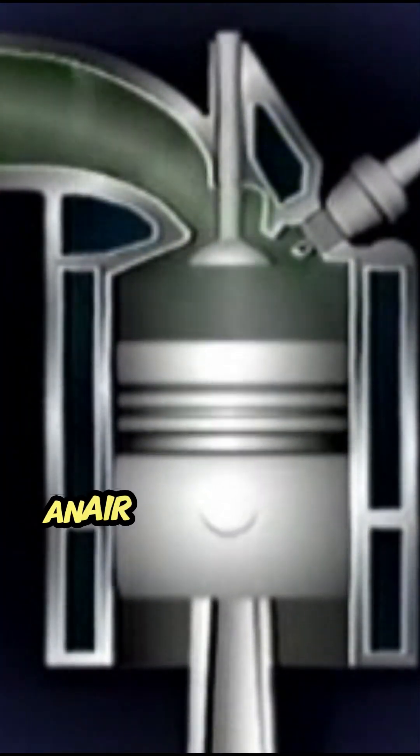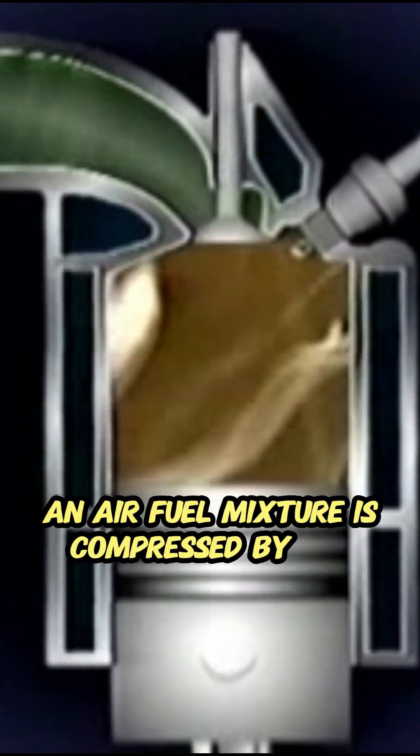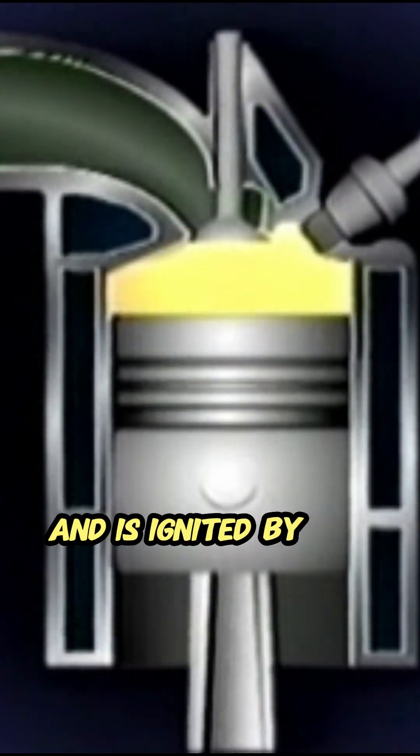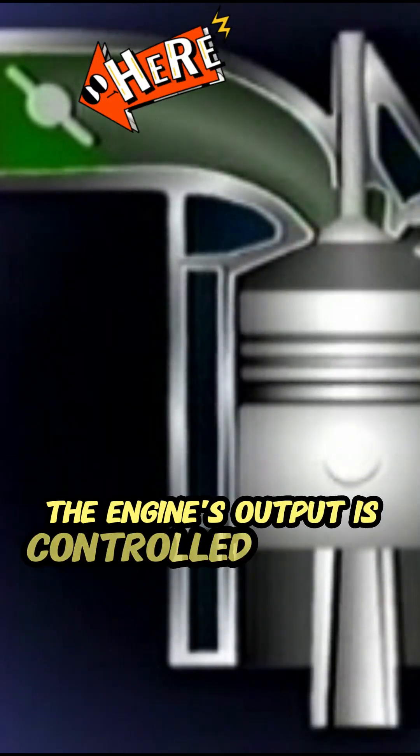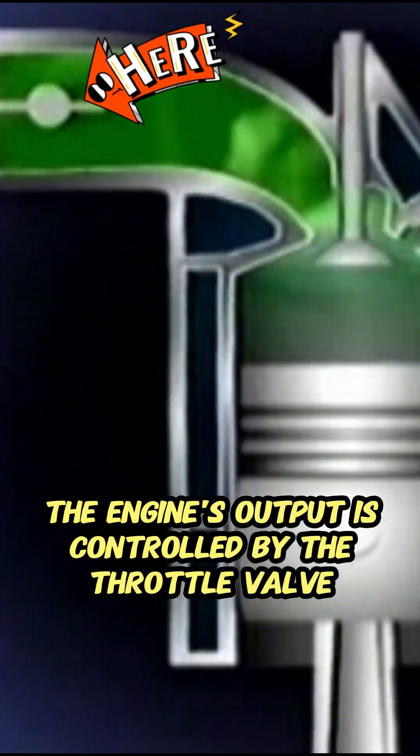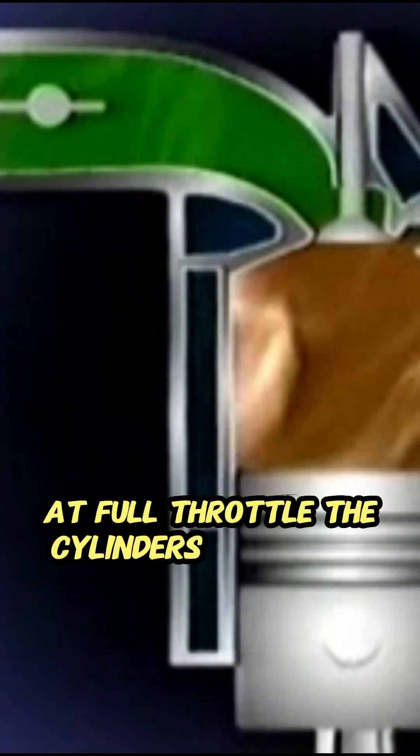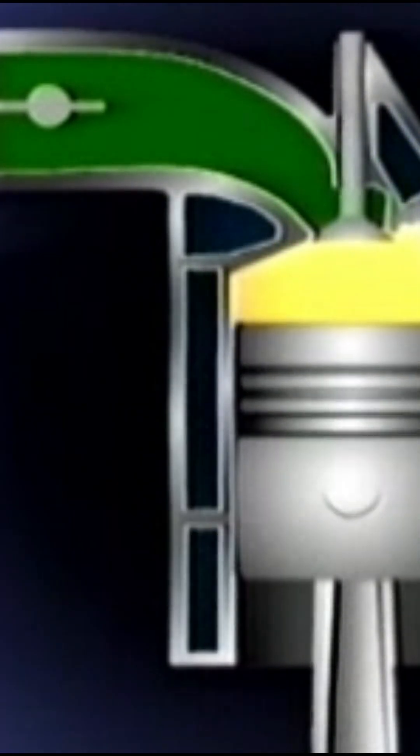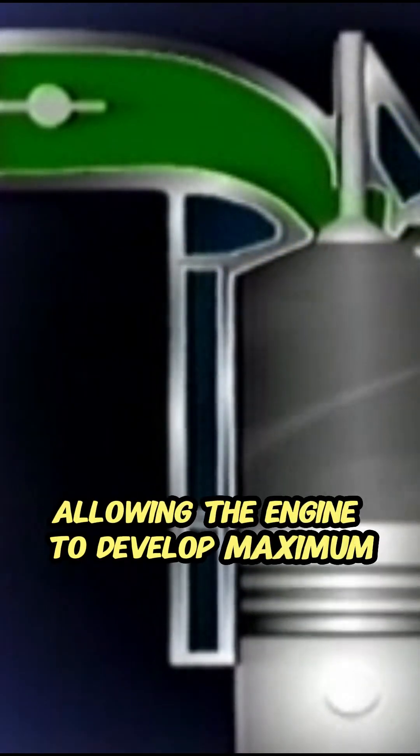In the petrol engine, an air-fuel mixture is compressed by the piston and ignited by the spark plug. The engine's output is controlled by the throttle valve. At full throttle, the cylinders are filled with mixture, allowing the engine to develop maximum power.